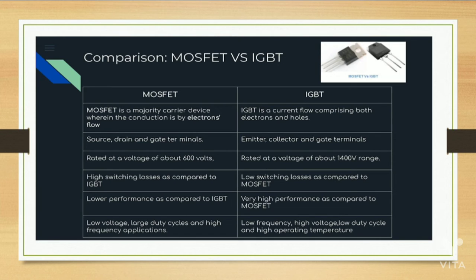IGBT current flow comprises both electrons and holes. It has three terminals: emitter, collector, and gate. It is rated at a voltage of about 1400 volts. It has low switching losses as compared to MOSFET and very high performance as compared to MOSFET. It is used in low frequency, high voltage, low duty cycle, and high operating temperature applications.